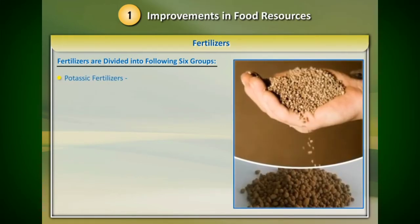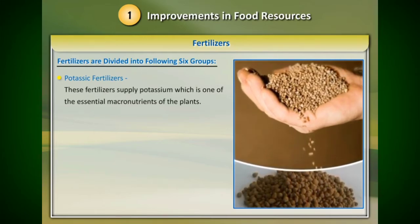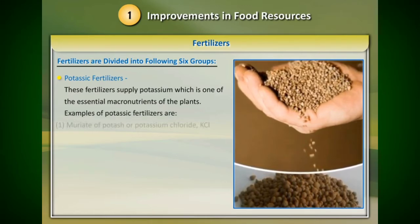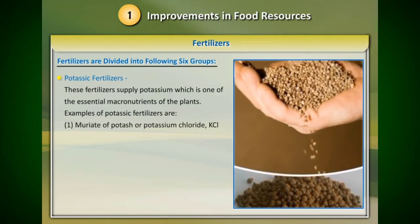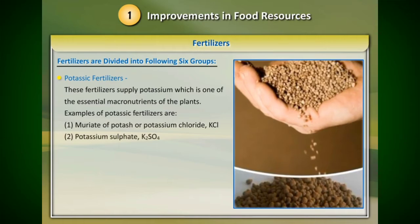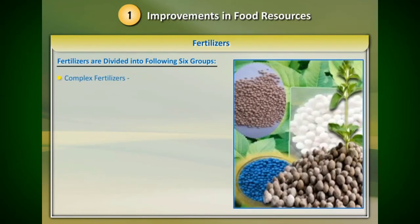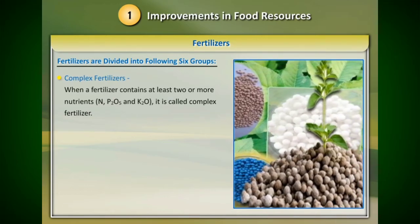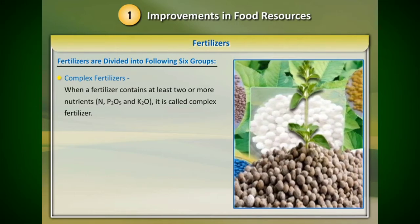Three: potassic fertilizers. These fertilizers supply potassium, which is one of the essential macronutrients of plants. Examples of potassic fertilizers are: 1) muriate of potash or potassium chloride KCl, 2) potassium sulfate K₂SO₄, 3) potassium nitrate KNO₃. Four: complex fertilizers. When a fertilizer contains at least two or more nutrients — N, P₂O₅, and K₂O — it is called a complex fertilizer.